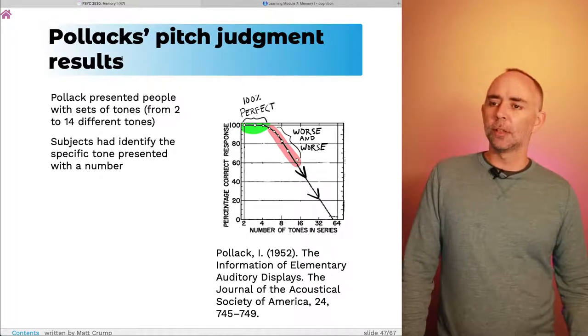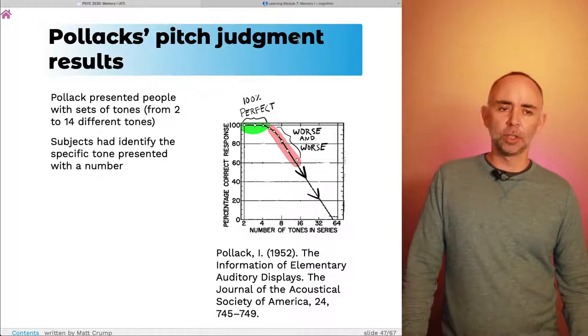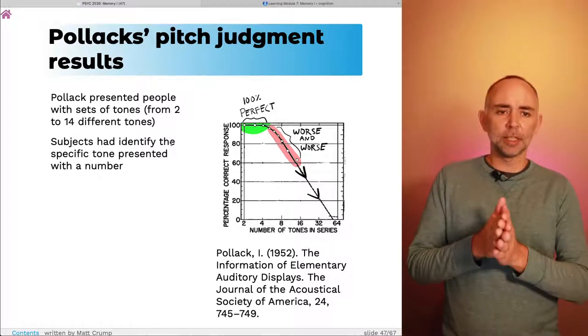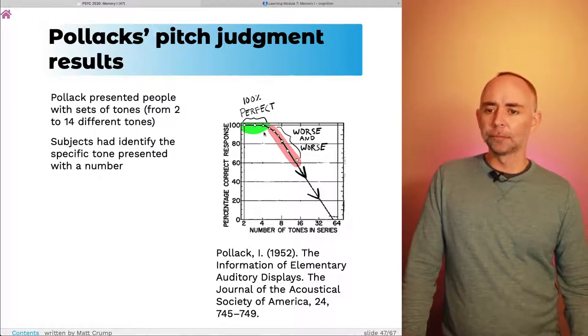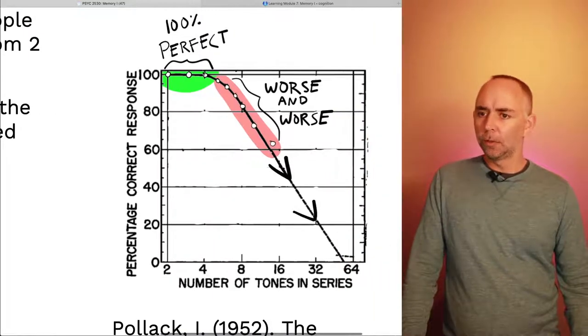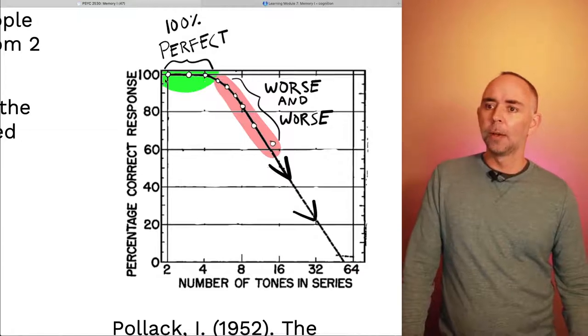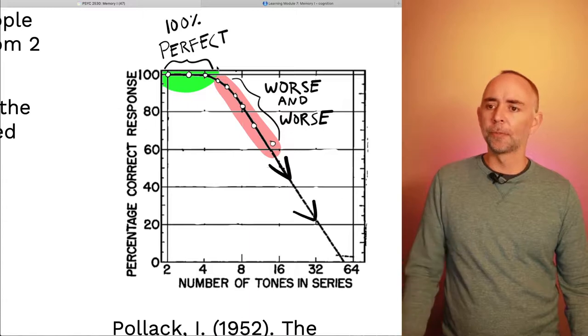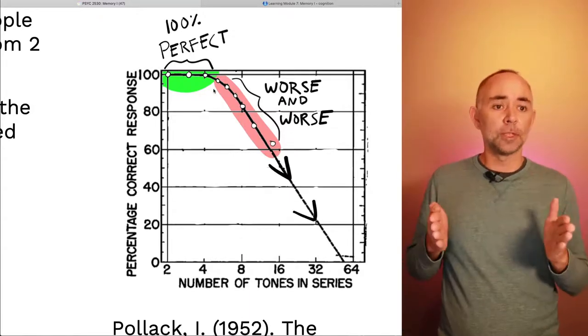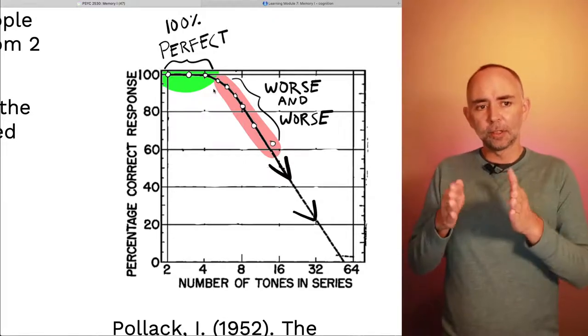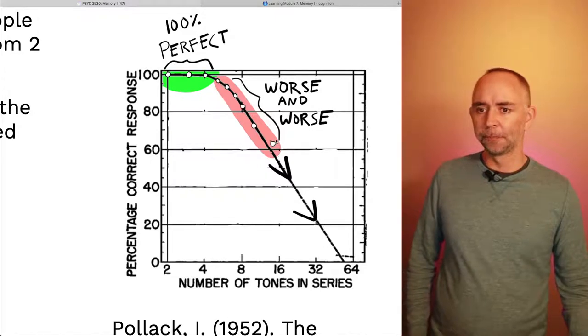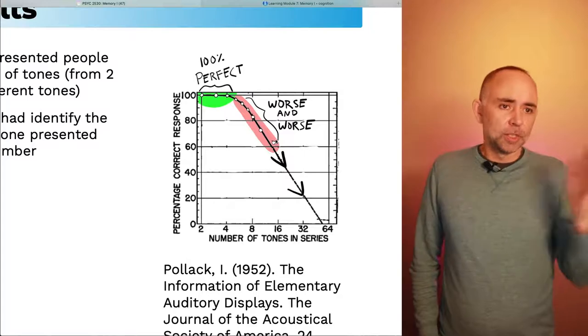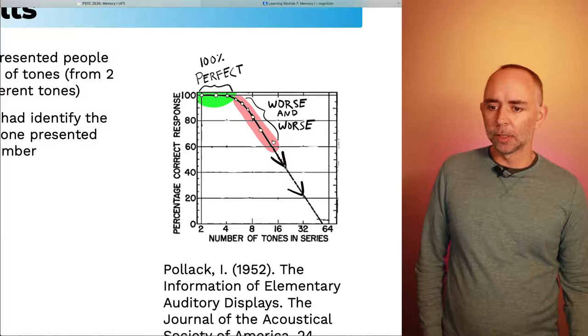Here are some results from Pollack's experiment on absolute pitch judgments. Pollack presented people with sets of tones from two to 14 different tones and had people identify specific tones by naming them with a number. When there were two tones or three total tones or four, people were basically perfect at saying one or two or one, two, or three, or four. So they had basically absolute pitch when there's only four different things. But look what happens as you start increasing the total number of possible tones. People get worse and worse and worse. So this is around 14. If you have absolute pitch, you'd just basically be perfect the whole time, but most people don't have that, and most people get worse and worse and worse.